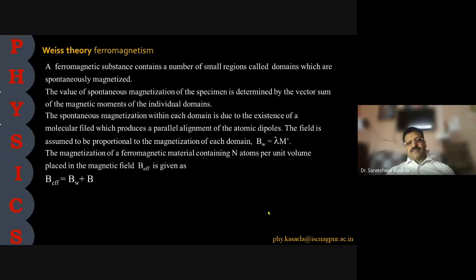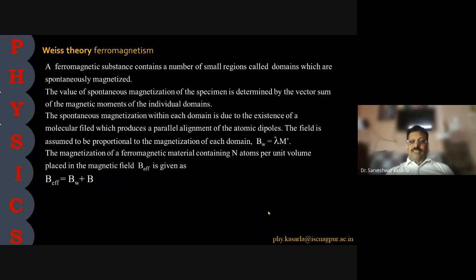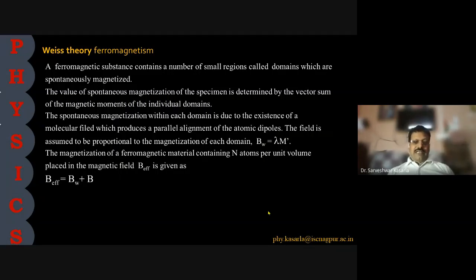In the theory of ferromagnetism, the ferromagnetic substance contains a number of small regions called domains. The value of spontaneous magnetization of the specimen is determined by the vector sum of magnetic moments of the individual domains. The spontaneous magnetization within each domain is due to the existence of a molecular field which produces parallel alignment of atomic dipoles. This field is assumed proportional to the magnetization of each domain, so B_W = λM. The effective magnetic field equals B_eff = B_W + B.